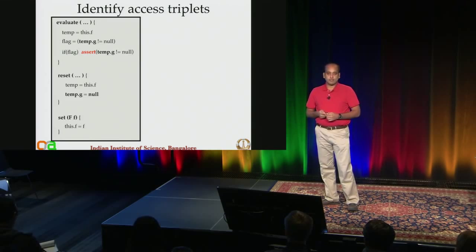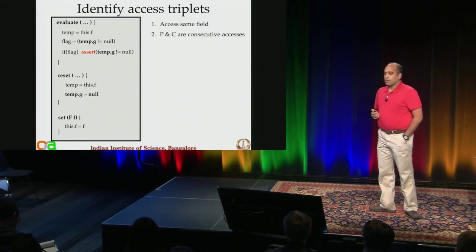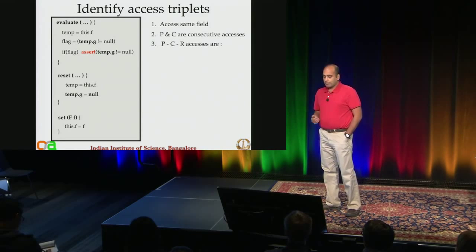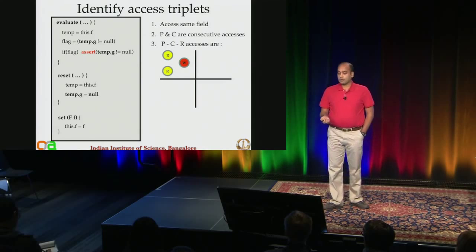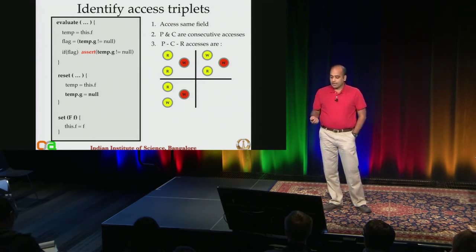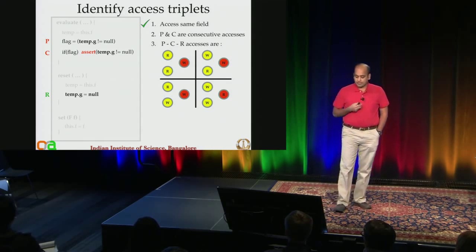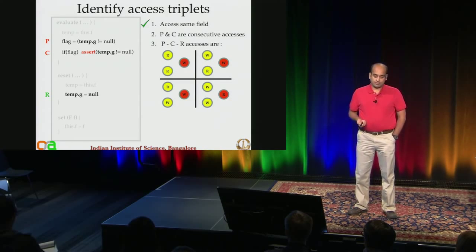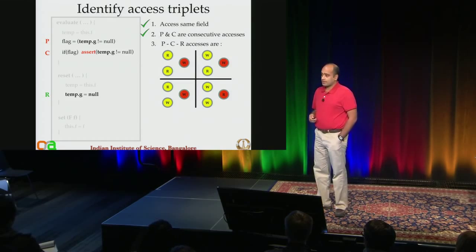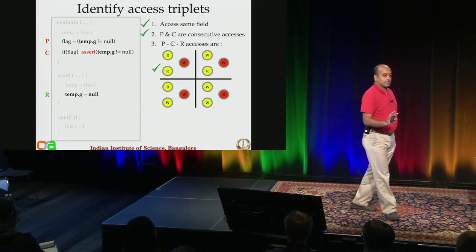To identify the access triplets: we look for accesses to the same field where P and C are consecutive accesses, and the P, C, R pattern is read-read-write, write-write-write, read-write-write, or write-read-write — the four scenarios where atomicity violations can actually happen. In this example, if we designate P, C, and R as shown, they all access the same field this.f, P and C are consecutive accesses, and they satisfy that pattern. So this is indeed an interesting access triplet.